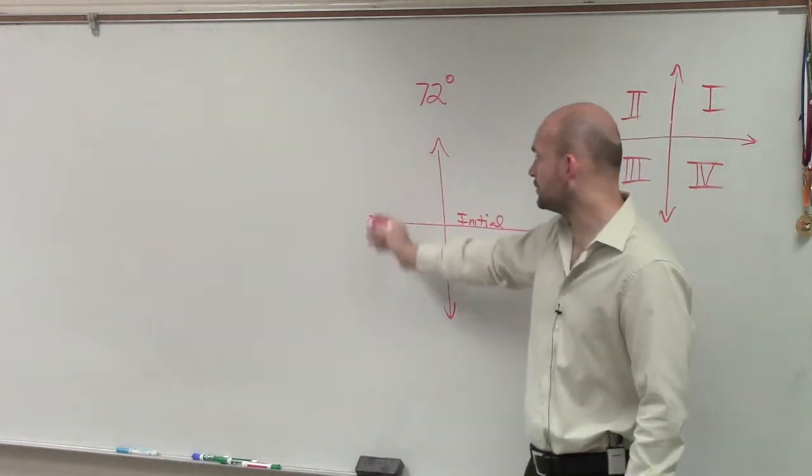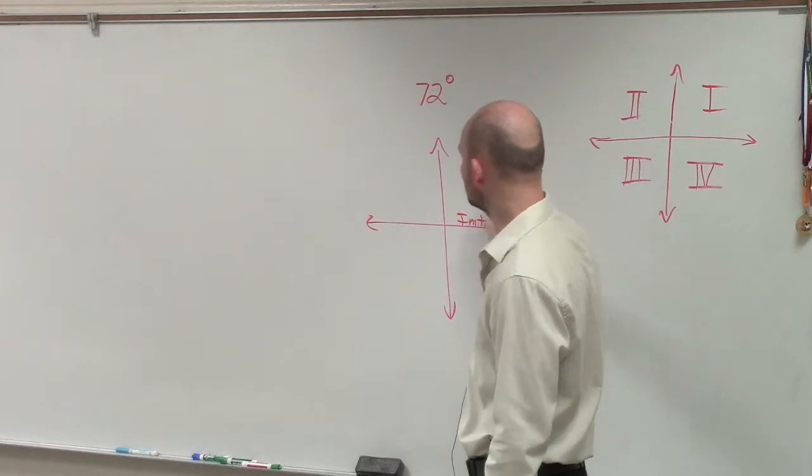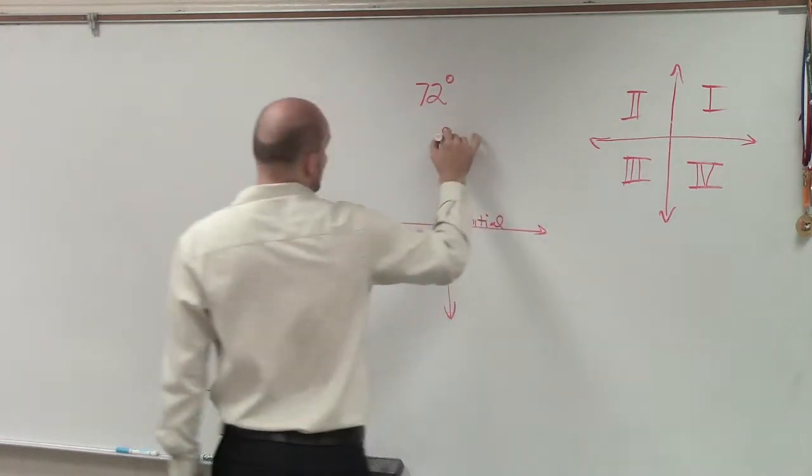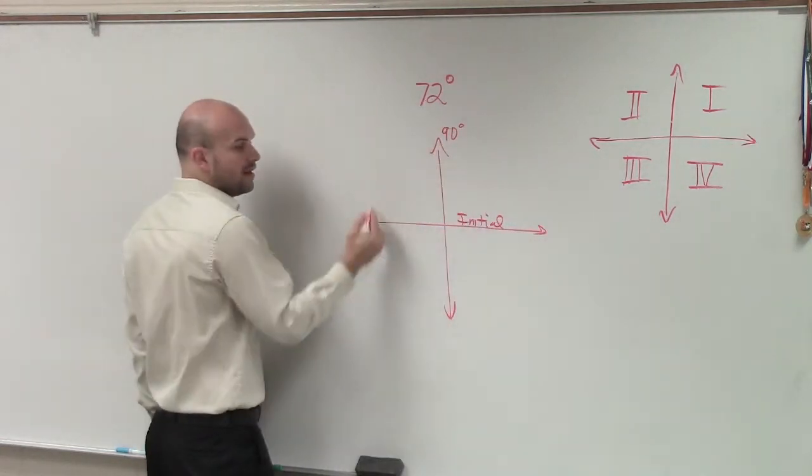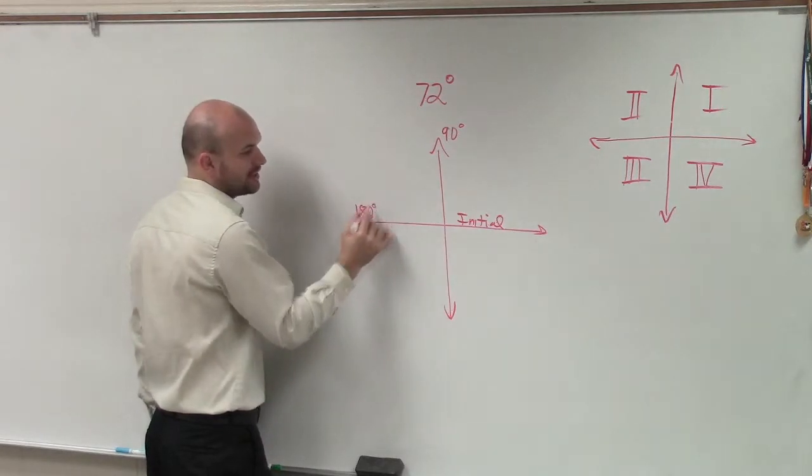Remember, when looking at this coordinate plane, if I rotate from my initial to my y-axis, that's going to be at 90 degrees. A straight angle would be 180 degrees.